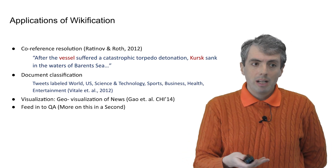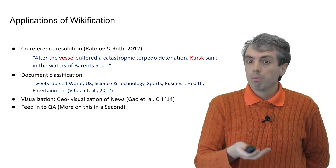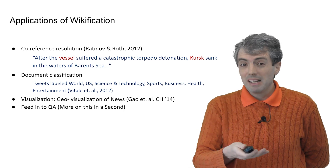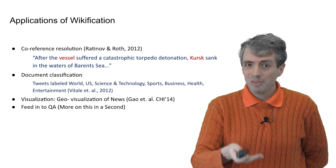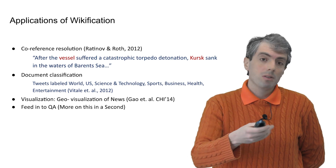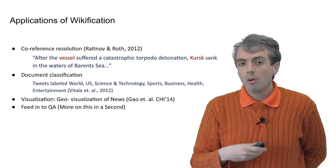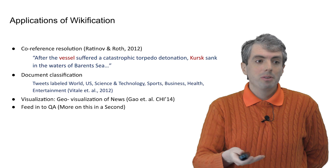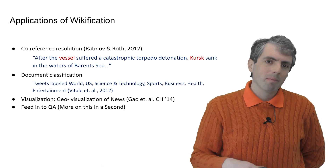Entity linking can also help you figure out what a document is about. For really short documents, like tweets, you might not be able to figure out the context without also knowing the entities involved. It can also help you visualize what's going on in large data sets — if you know all of the entities, you can put them on a map. This can also feed into question-answering applications.